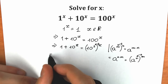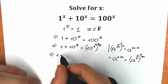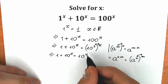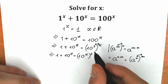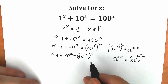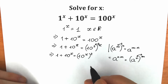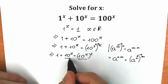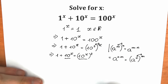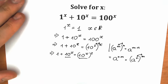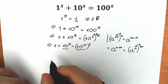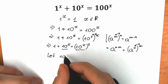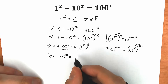So as a result, we have: 1 plus 10 to the power x equal to 10 to the power x, squared. Now let's write our substitution, because we have 10 to the x appearing twice. Let 10 to the x equal to y.